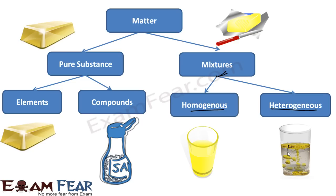In a heterogeneous mixture, if you take one part from here and one part from there, you will see a difference in composition. For example, with oil and water, you get more oil in one part. In contrast, with a juice mixture, you get uniform composition from any part — that is a homogeneous mixture.